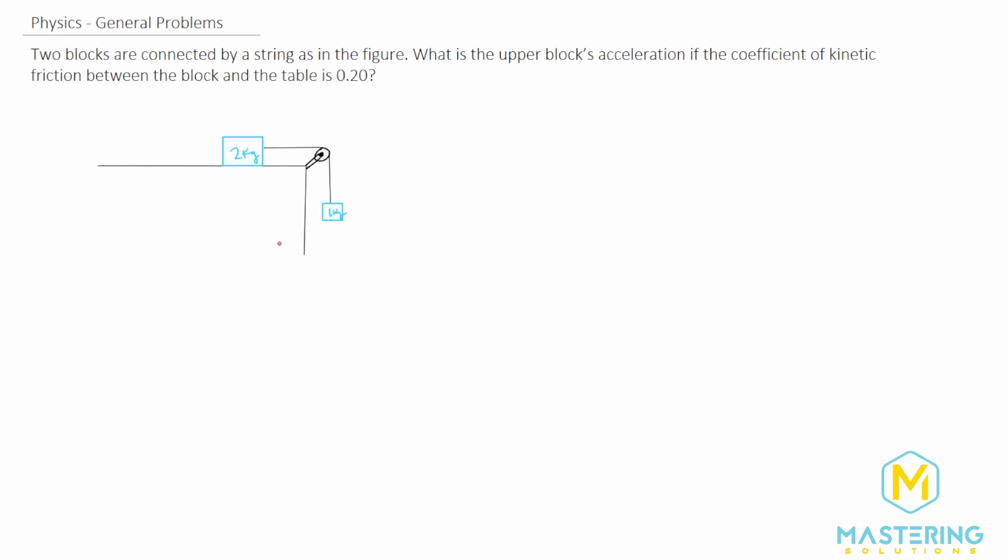In this one we have these two blocks connected by a string and we need to figure out what the upper block's acceleration is if the coefficient of kinetic friction between the block and the table is 0.2. First it's always smart to go and draw all the forces on here. So obviously we're going to have tension and then there's also going to be acceleration as it's speeding up.